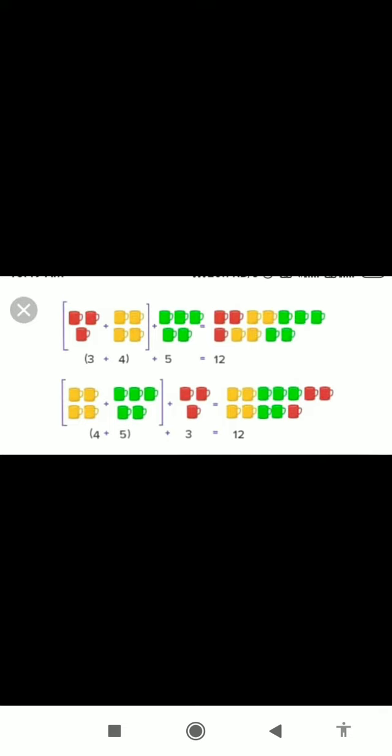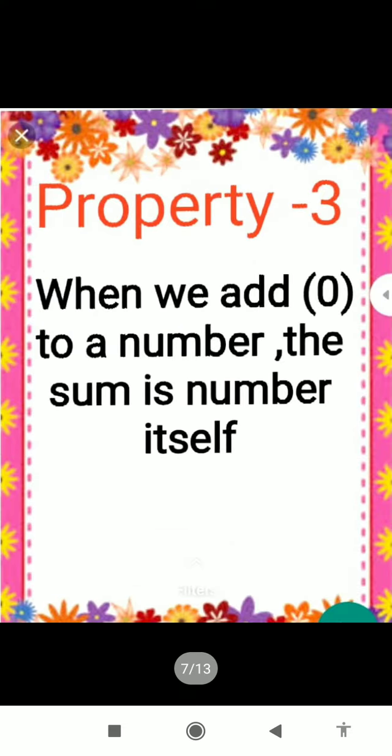We have 3 plus 4 and then plus 5, so we get 12. And when we add 4 plus 5 and then add 3, we also get 12. Property three: when we add zero to one number...